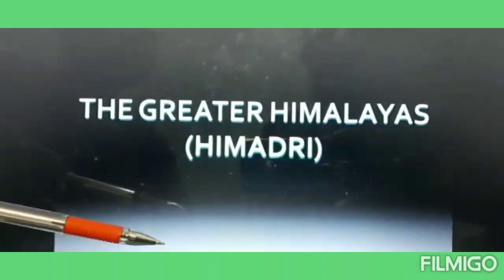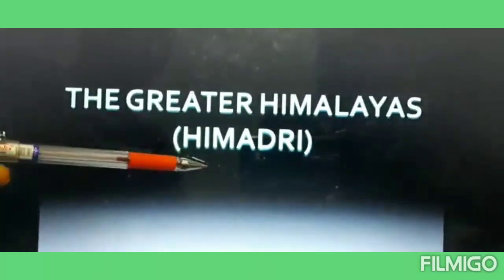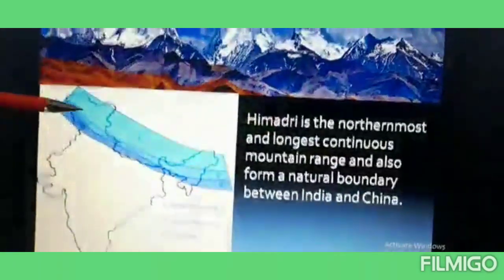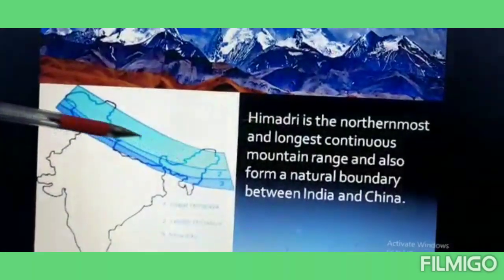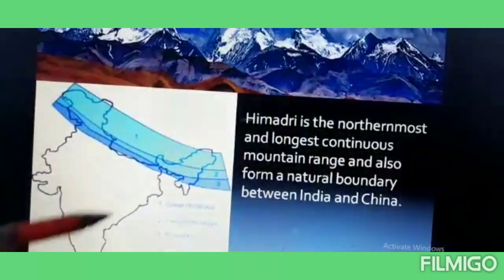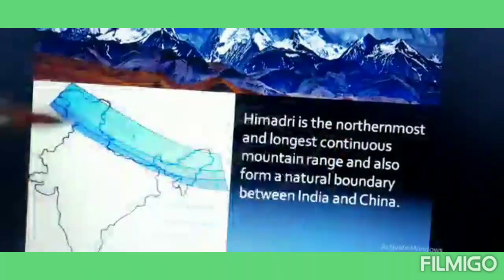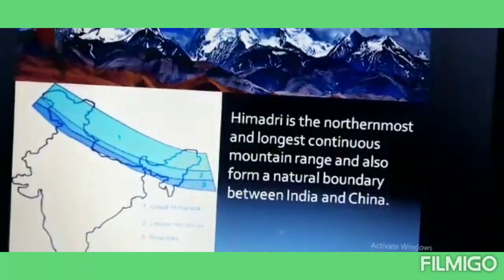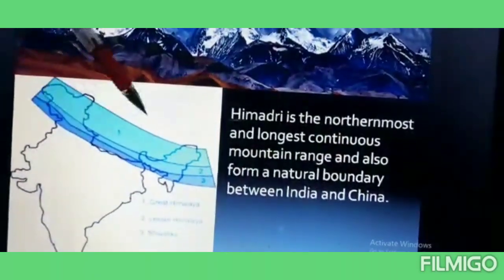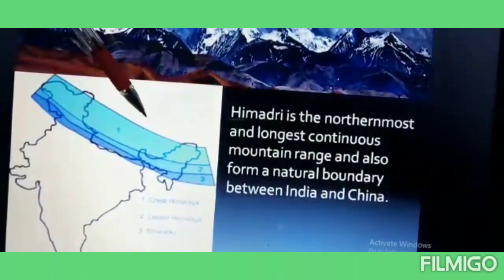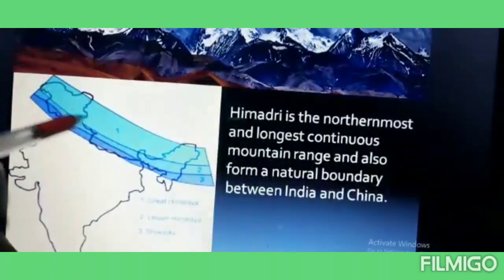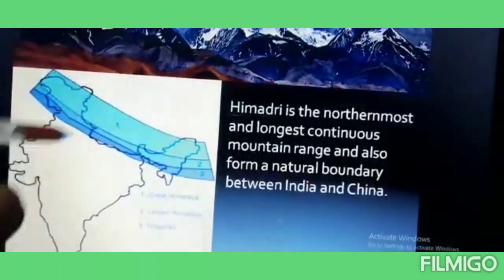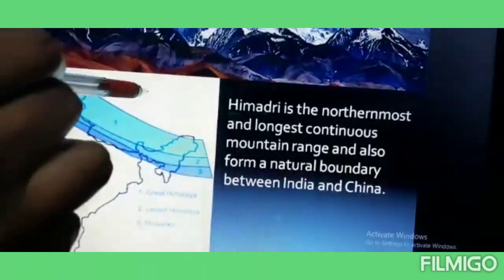Now we will see in detail about Himadri, the greater Himalayas. Himadri is the northernmost and longest continuous mountain range and also forms a natural boundary between India and China.